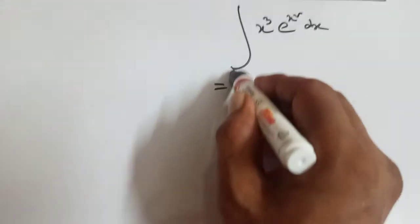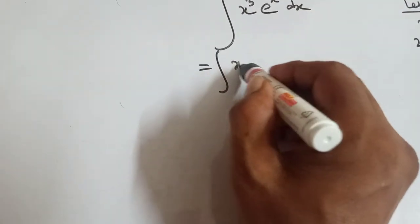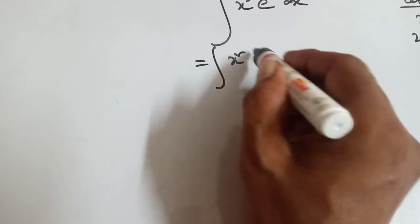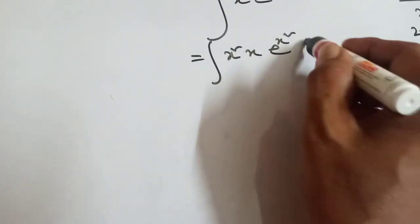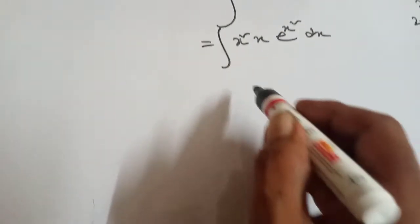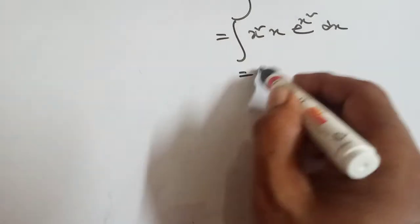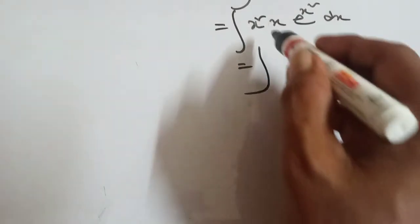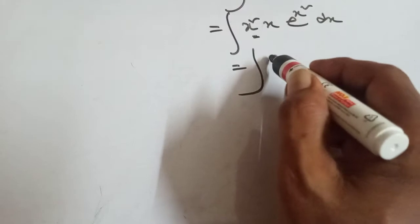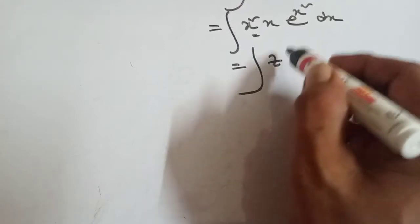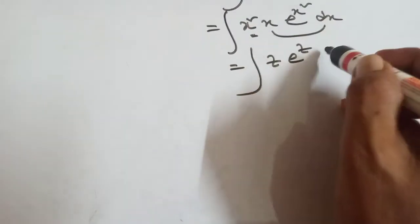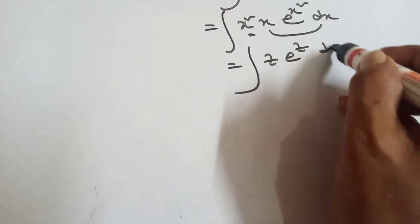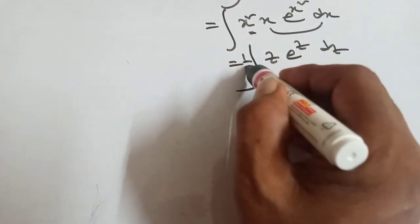Now break this: x cube means x square into x, into e to the power x square dx. Now put the value: x square means z, e to the power z, and x dx means dz by 2, that means 1 by 2.